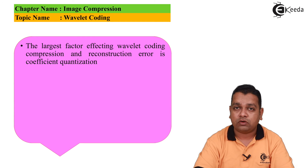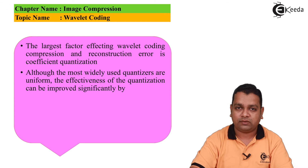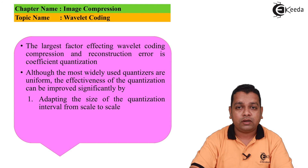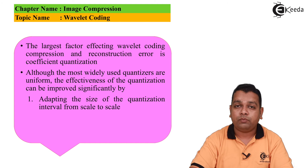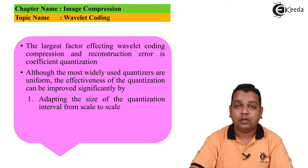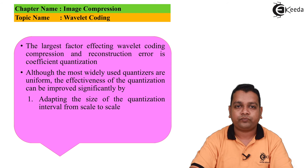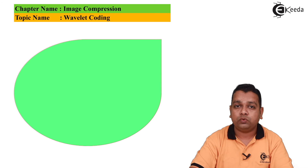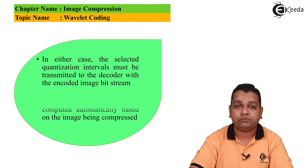The third and largest factor affecting Wavelet coding compression and reconstruction error is coefficient quantization. Although the most widely used quantizers are uniform, the effectiveness of quantization can be improved significantly by either introducing an enlarged quantization interval around zero — called the dead zone — or by adapting the size of the quantization interval from scale to scale. In either case, the selected quantization intervals must be transmitted to the decoder with the encoded image bit stream.